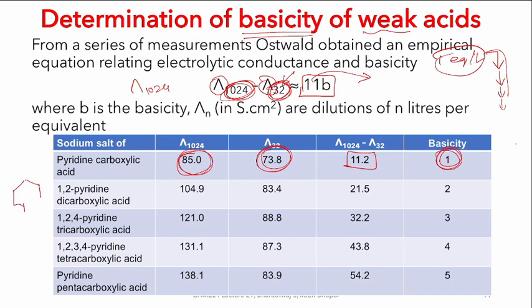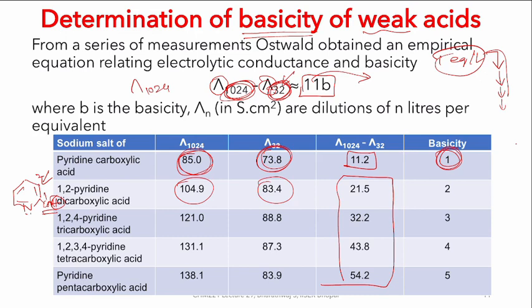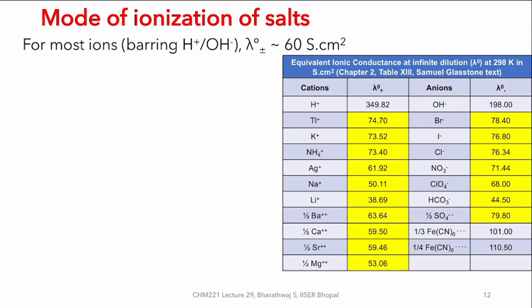A nice example is shown using pyridine carboxylic acid with increasing numbers of COOH groups. As you serially include more carboxylic acid groups, the acidity keeps increasing. The measurements for λ₁₀₂₄ and λ₃₂ — the difference — nicely come out as close to 11, 22, 33, 44, and 55. One application limitation is that when you have a very weak acid where dissociation does not happen appreciably, this empirical rule doesn't hold.